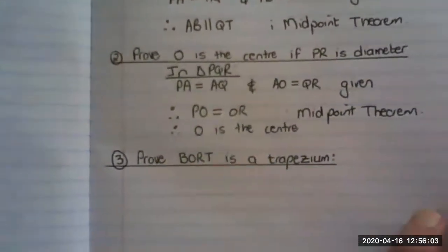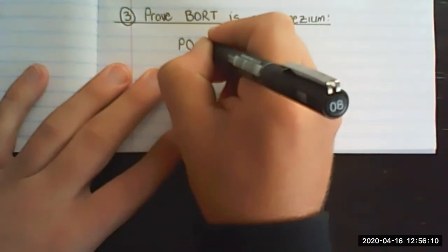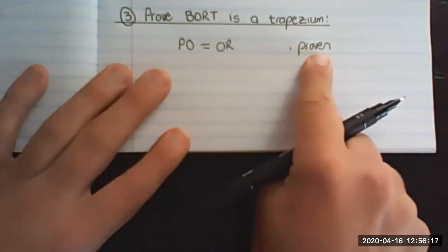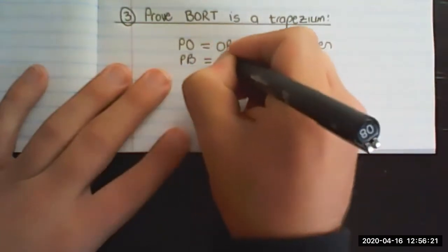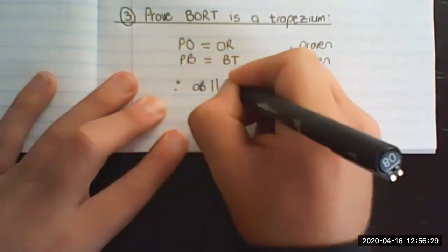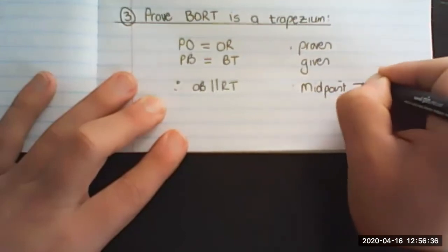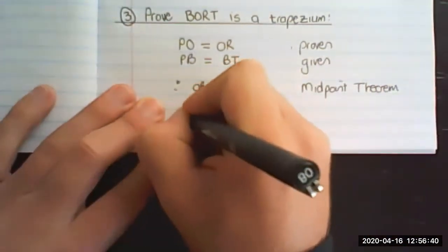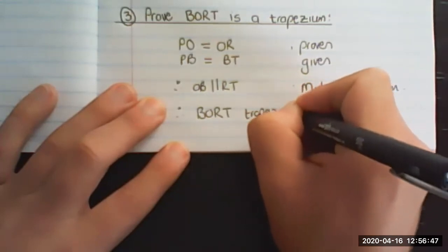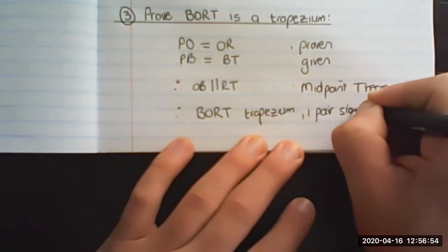Easy way to write it is we say PO is equals to OR, proven. It's not given, we proved it in the previous question. Then PB is equals to BT. That information is given. Therefore, OB is parallel to RT. What you have proven is the midpoint theorem. Therefore, BORT is a trapezium because one pair of sides is parallel.